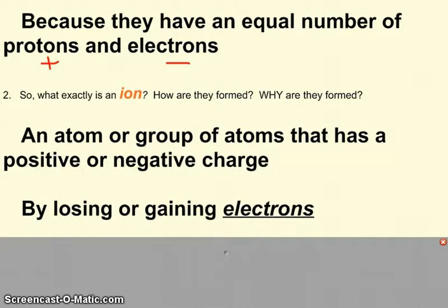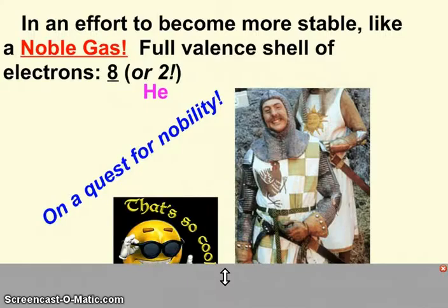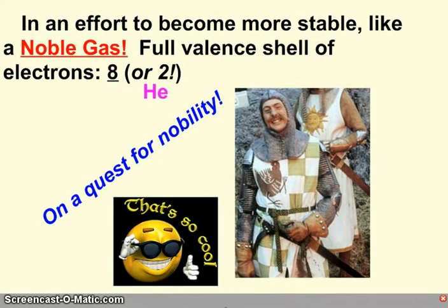Why is this happening, though? And remember when we, back in the periodic table unit, I had a picture of a Smurf in a knight outfit. And I said that the ions were on a quest for nobility. And that's exactly what's going on. They want to be stable. They want to be like the idols of stability, the noble gases. And that is happening because of the full valence shell of electrons, the magic number of eight.